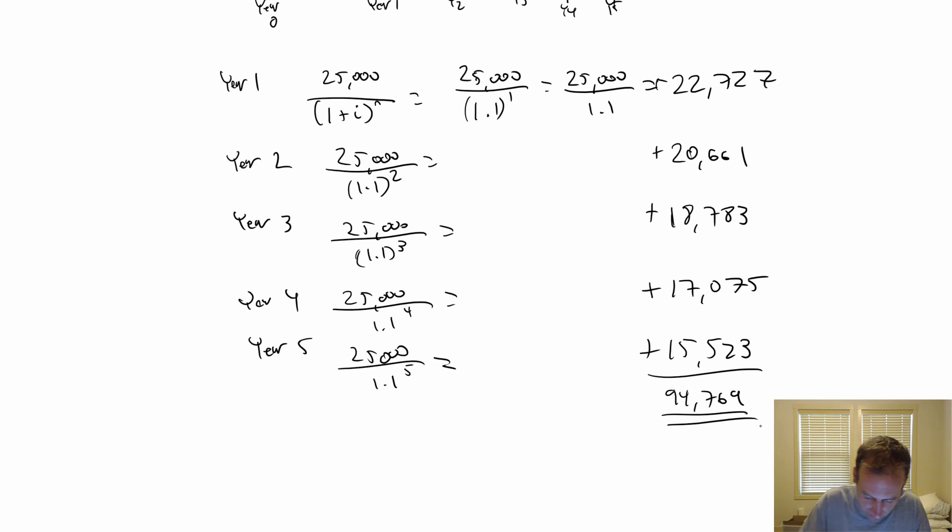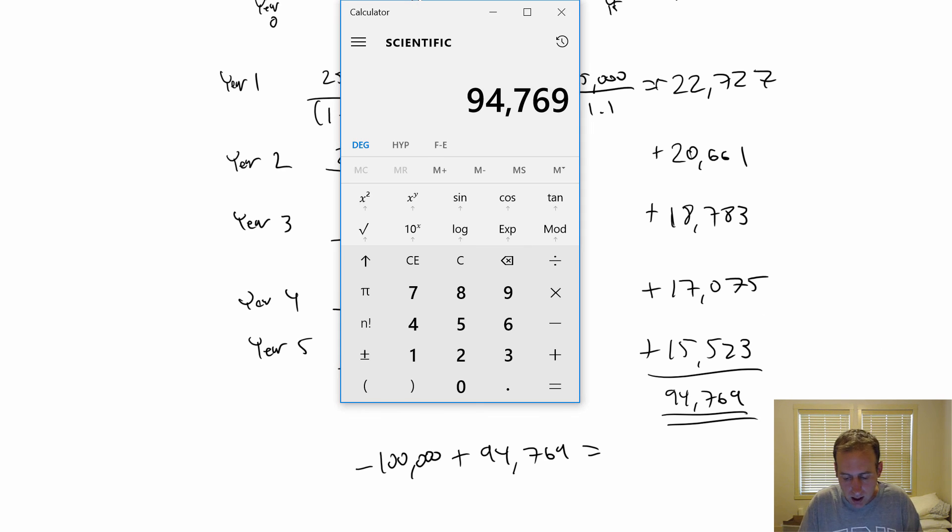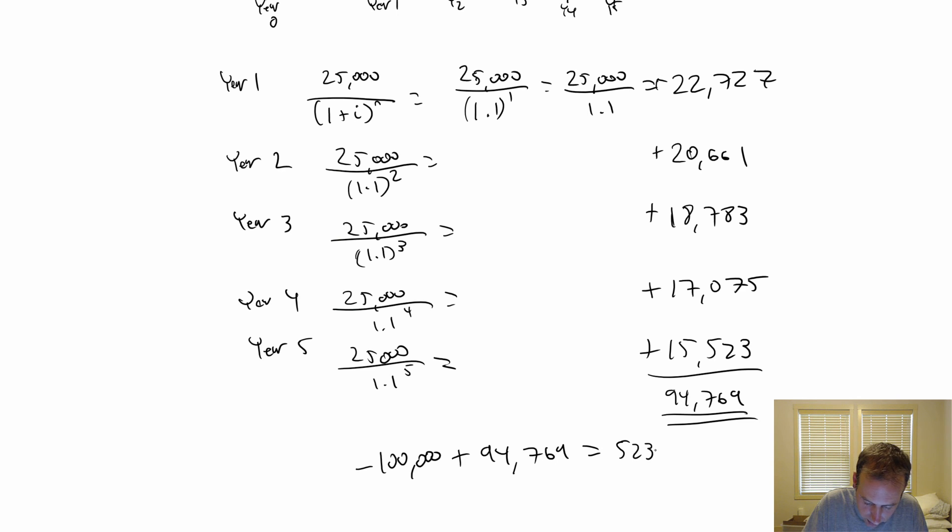Should I buy the machine? No way. I'm spending $100,000 today to generate cash flows that are worth today $94,769. $100,000 going out, $94,000 coming back. I'm not a finance genius, but even I can tell you that ain't a good idea. Minus $100,000 means we're $5,231 worse off if we do the deal.